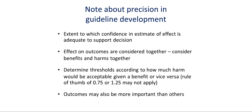A note about imprecision and precision in guideline development: the definition of imprecision in guideline development expresses the extent to which confidence in an estimate of effect is adequate to support a decision, implying that both benefits and downsides need to be considered together. This can be done by determining thresholds according to how much harm would be acceptable given a certain benefit or vice versa. The rule of thumb of 0.75 or 1.25 may not apply, and it also does not apply when there is a difference in importance of the outcomes.